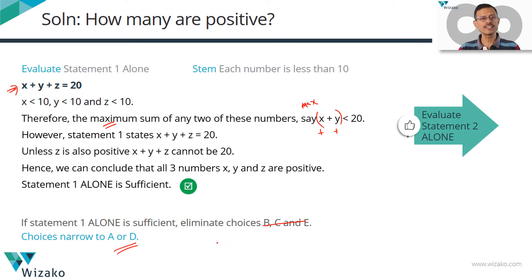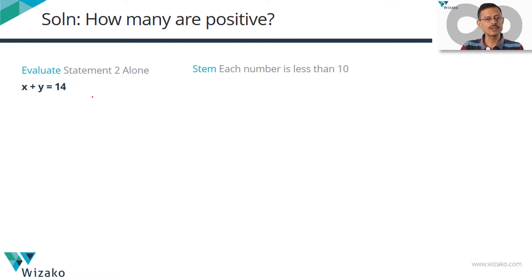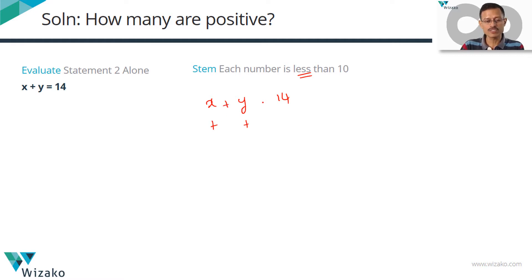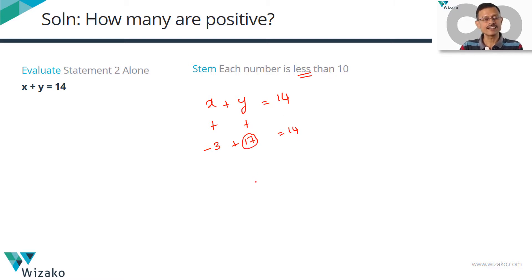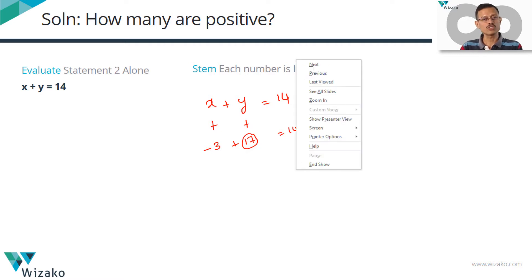Let's evaluate Statement 2 alone to decide between A and D. Statement 2 tells us that x plus y equals 14. Two numbers x and y add up to 14, and we know each is less than 10. It's evident that both x and y must be positive for this to be possible. If x were negative, say minus 3, then y would have to be 17 — but y cannot be 10 or more. So x and y are both positive. From Statement 2 so far, we've inferred that two of these numbers are positive.